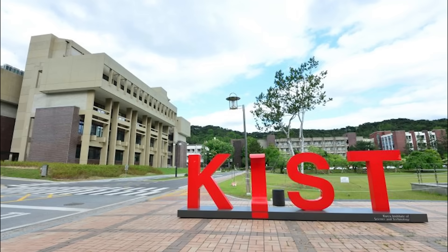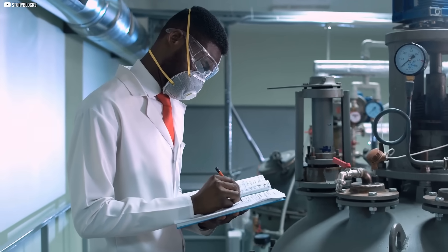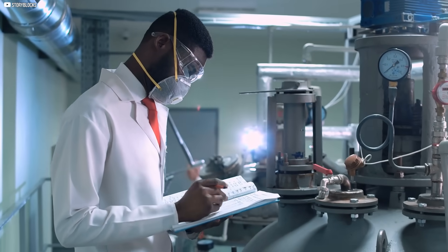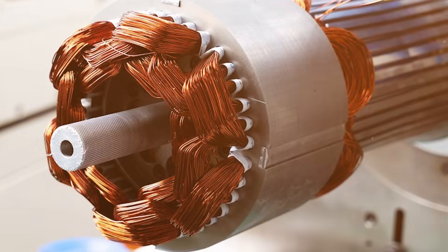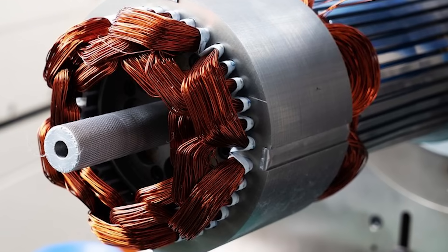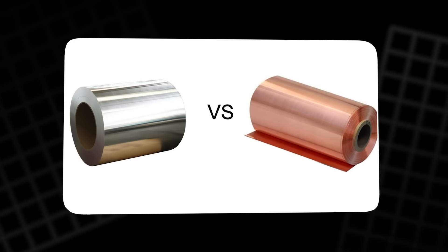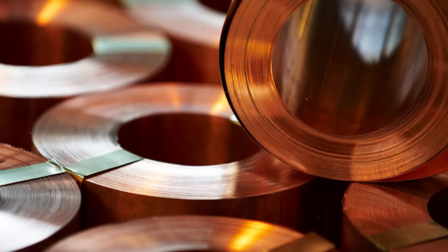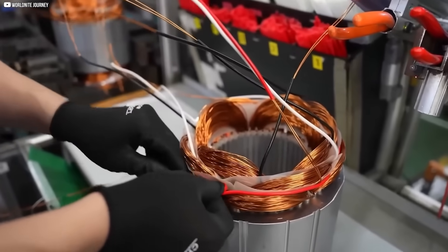Deep inside a research lab at the Korea Institute of Science and Technology, a small group of engineers started asking a question no one dared to ask before. What if electric motors didn't need metal coils at all? This wasn't just a casual thought experiment. They knew the challenges. Metals like copper and aluminum weren't used by accident. They were chosen for a reason. Reliability, conductivity, and availability.